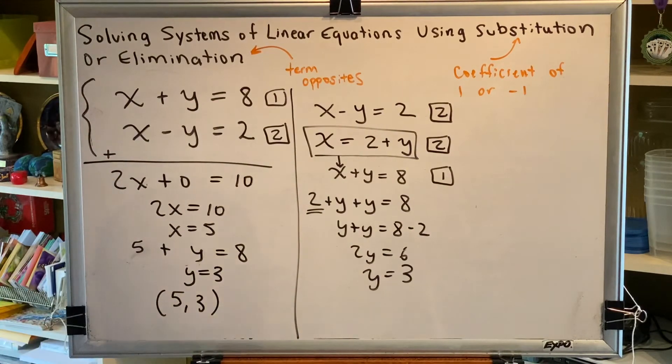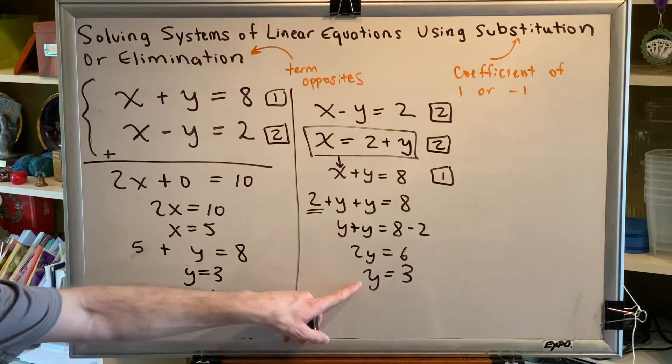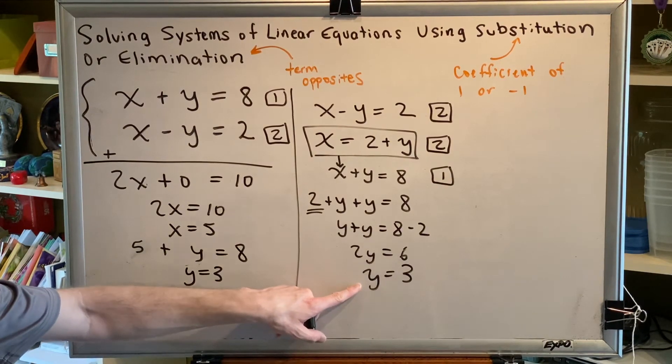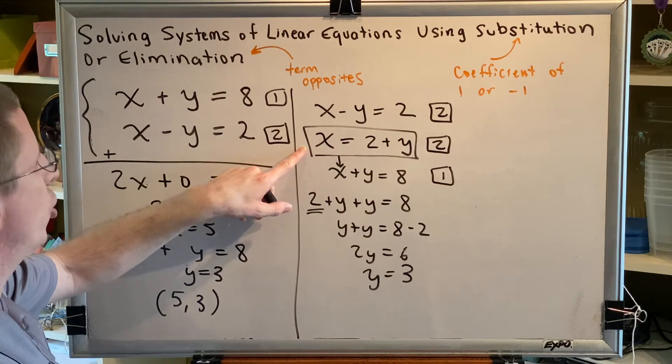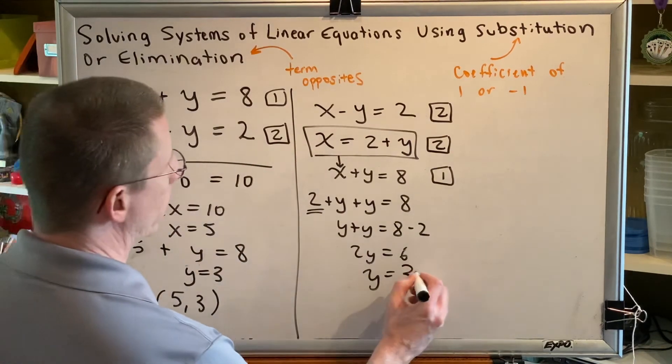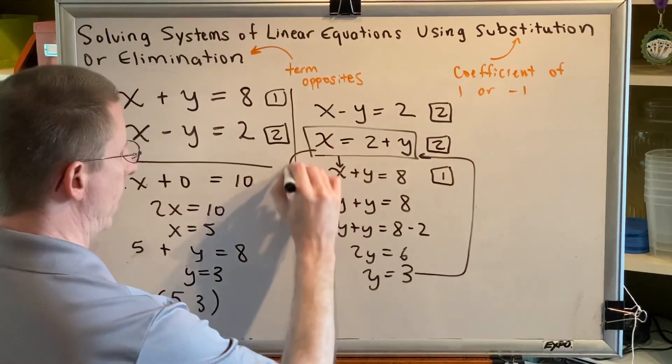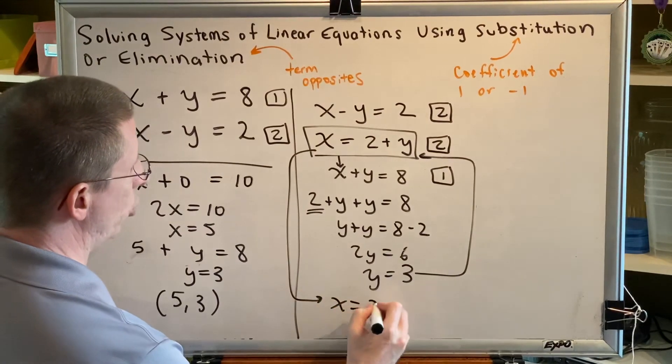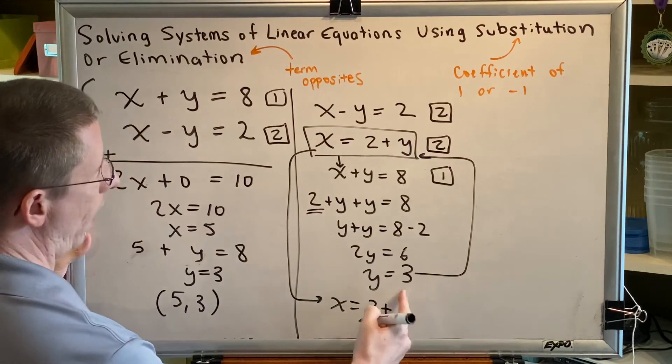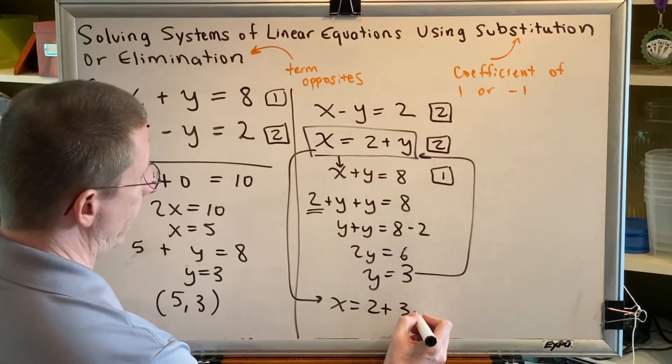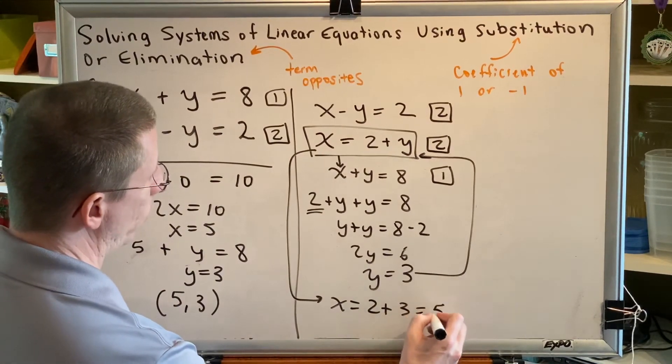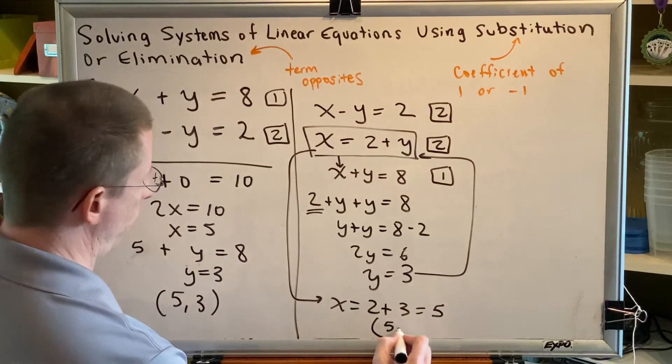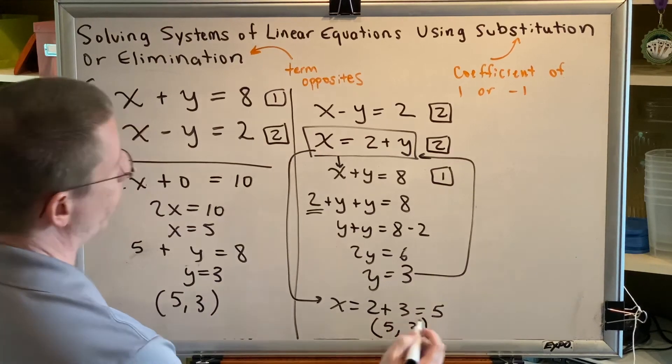Now we have to find somewhere to plug into. Well, we know y. What we don't know is x. So let's plug in here and see what we discover. x is equal to 2 plus y. y is 3. So we get x is equal to 2 plus 3, which is 5. And we get the ordered pair 5 comma 3.